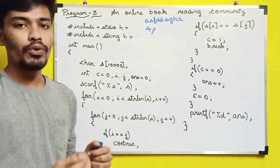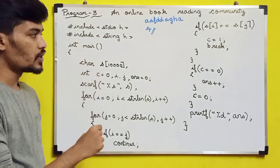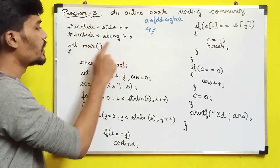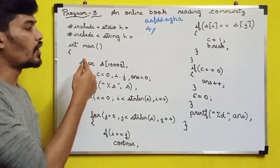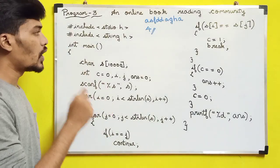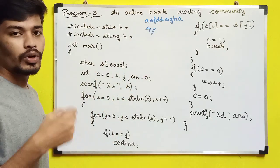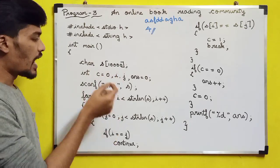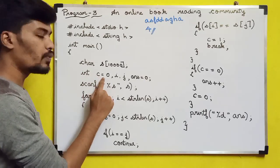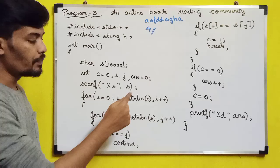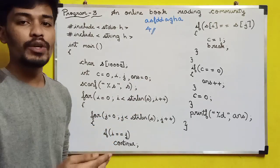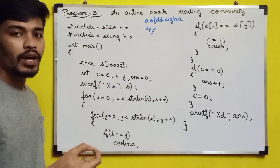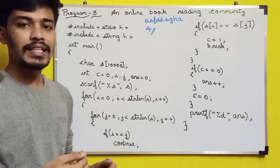They will give the program structure and we have to write only the code inside the main function. We are going to use the strlen function, which is defined in string.h header file — they won't declare it, so we have to include it ourselves. Don't forget to include it, otherwise you will get an error. We declare an array of characters S with size 10,000 for input, and integer variables: C equal to 0 for counting, i and j as loop variables, and answer equal to 0 for the final unique character count. We get input using scanf with %s.